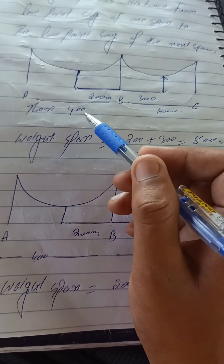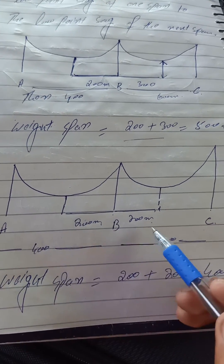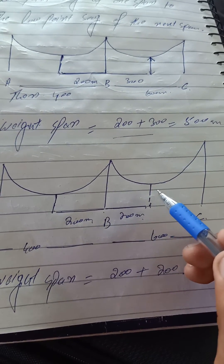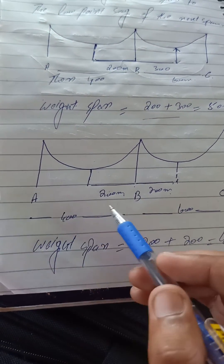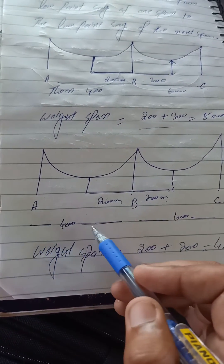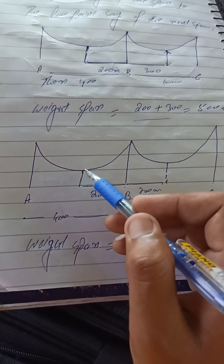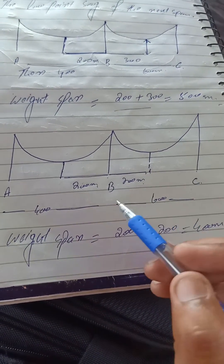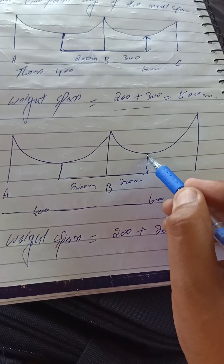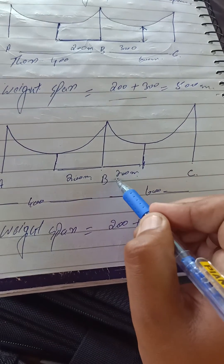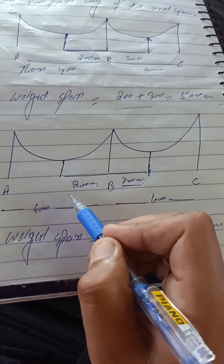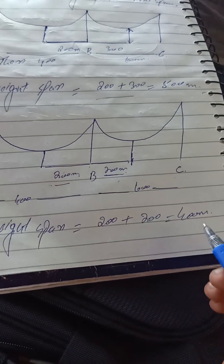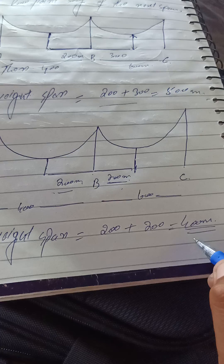For example, if poles B and C are on different levels, the lowest point will not be at the midpoint of the span. When A and B are on the same level with a span of 400 meters, the lowest point is at the midpoint, which is 200 meters. For span B–C, where poles are at different levels, the lowest point of the sag is at 200 meters from B. Therefore, the weight span is equal to 200 plus 200, which equals 400 meters.